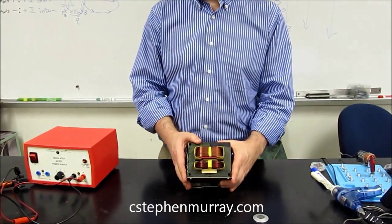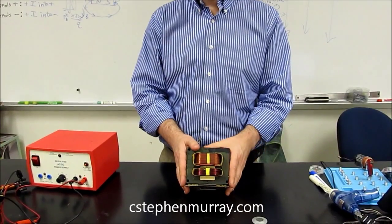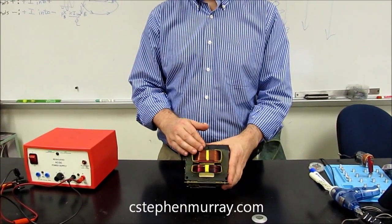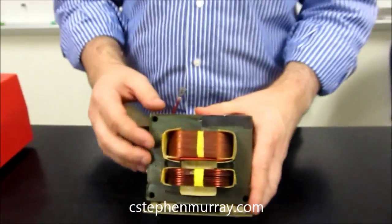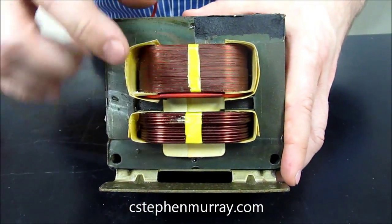This right here is out of a microwave oven. It's very heavy, about 20-25 pounds. What a transformer does is it changes one kind of alternating current with one voltage to another. If you look at this right here, the basic structure of a transformer is very obvious.